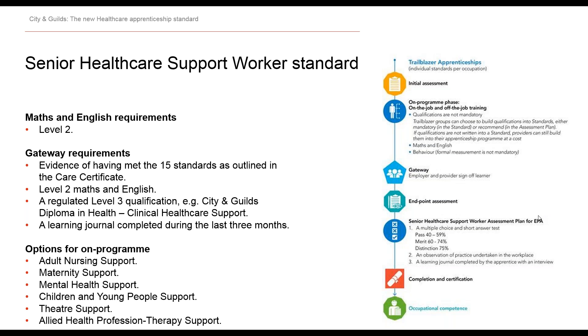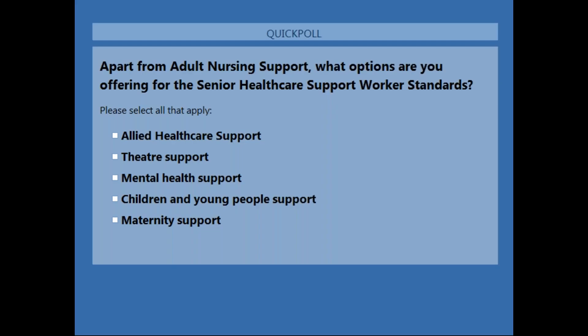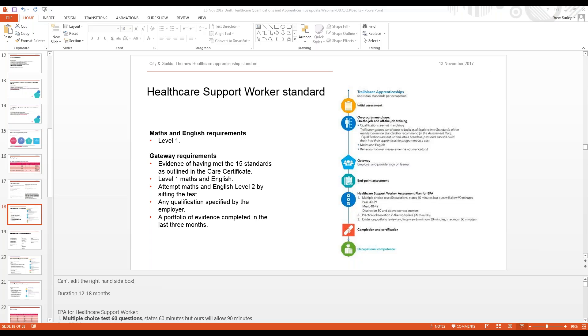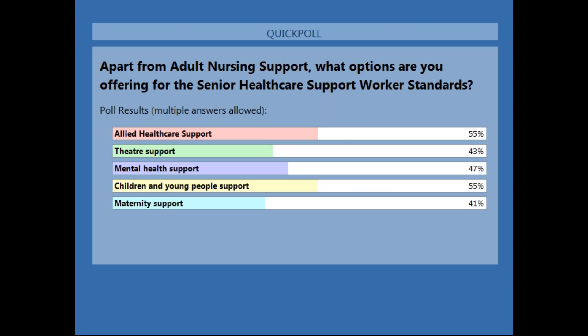Second poll question: Apart from adult nursing support, what options are you offering for the Senior Healthcare Support Worker Standard? The options are: Allied Health Care Support, Theatre Support, Mental Health Support, Children and Young People Support, or Maternity Support. Thank you for your responses — it's pretty well balanced, and that's really interesting for us to know.